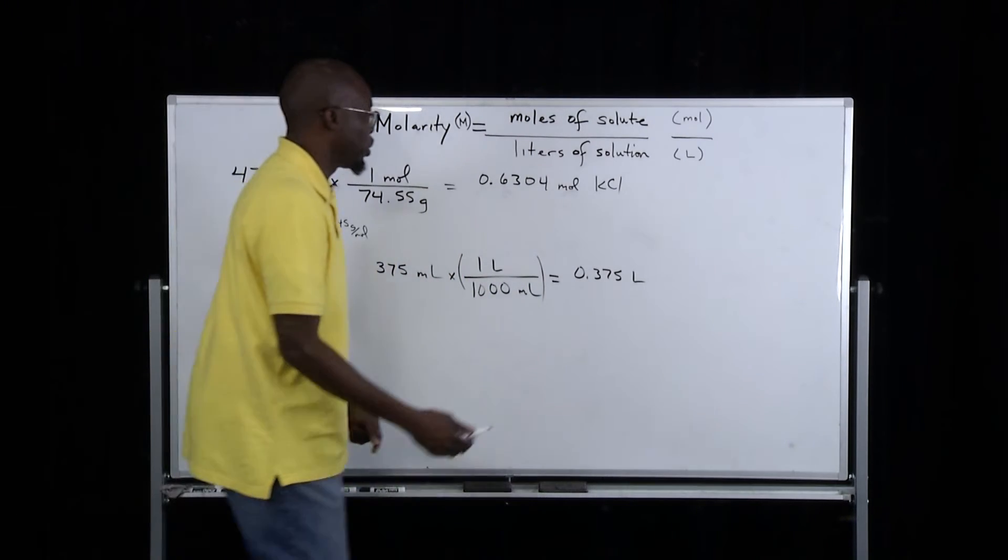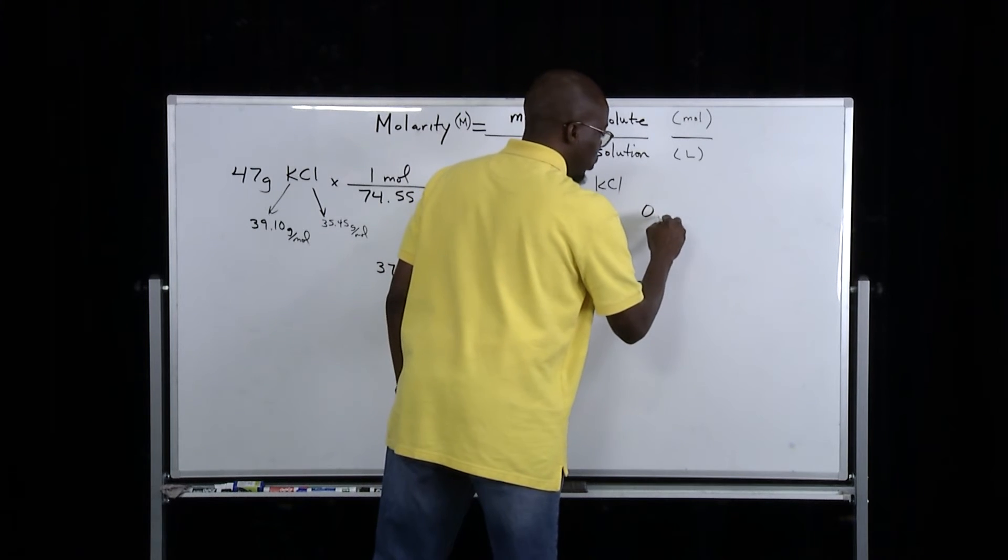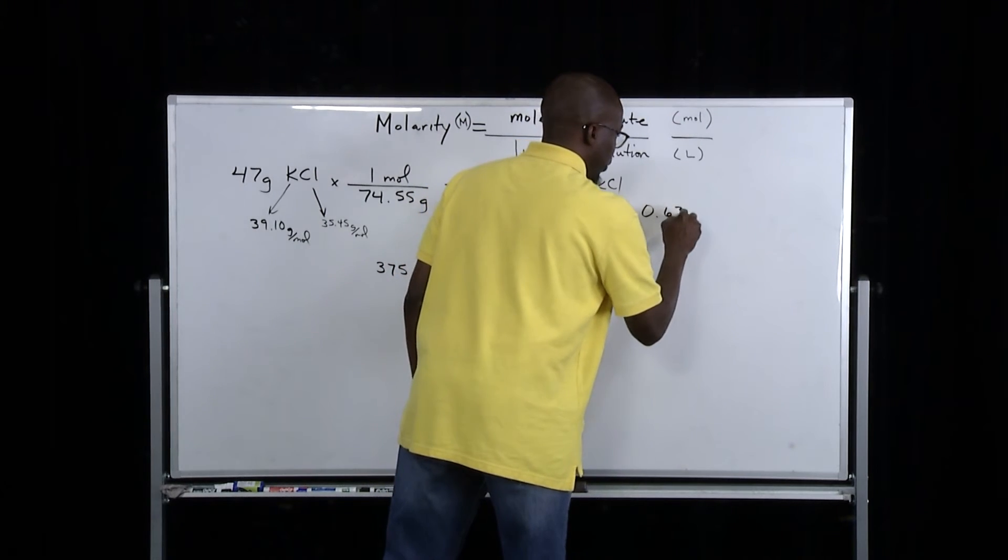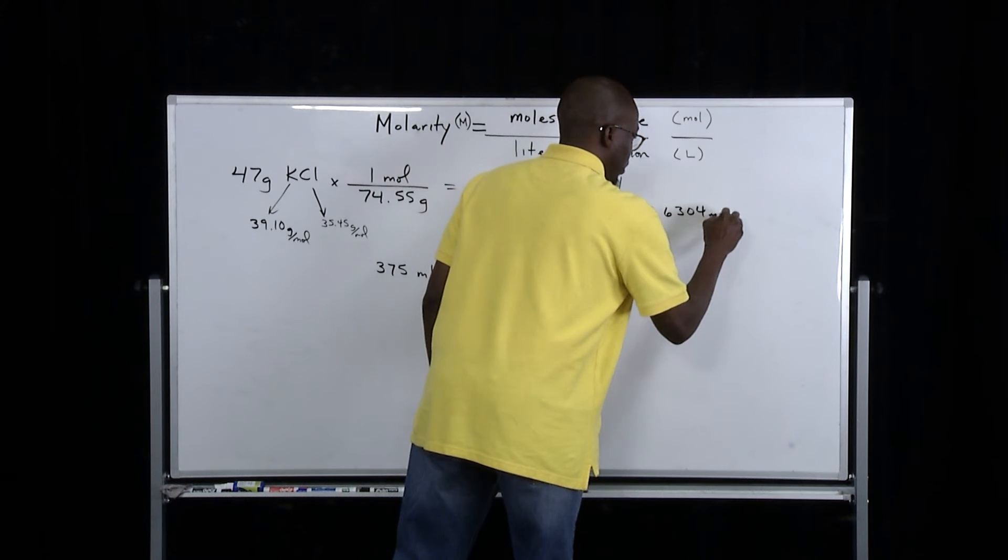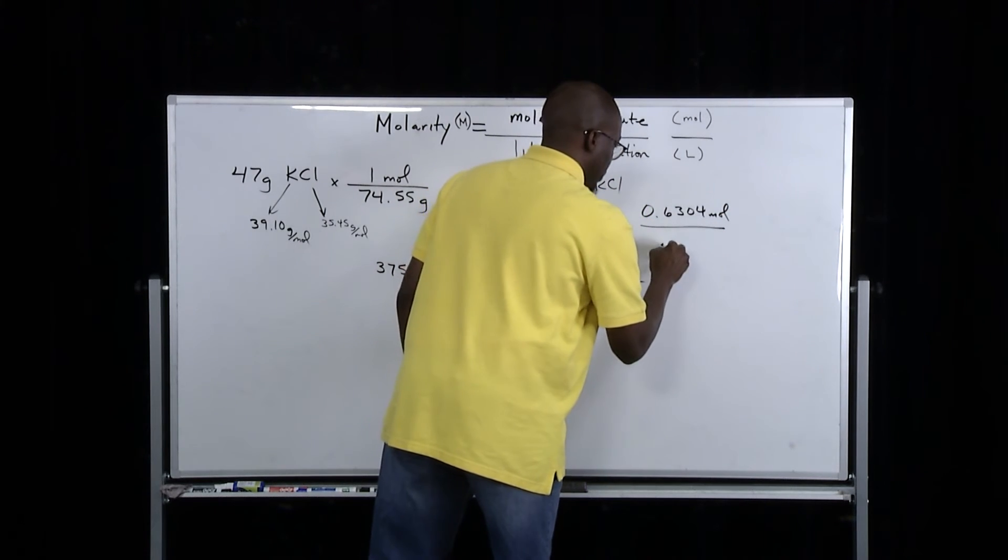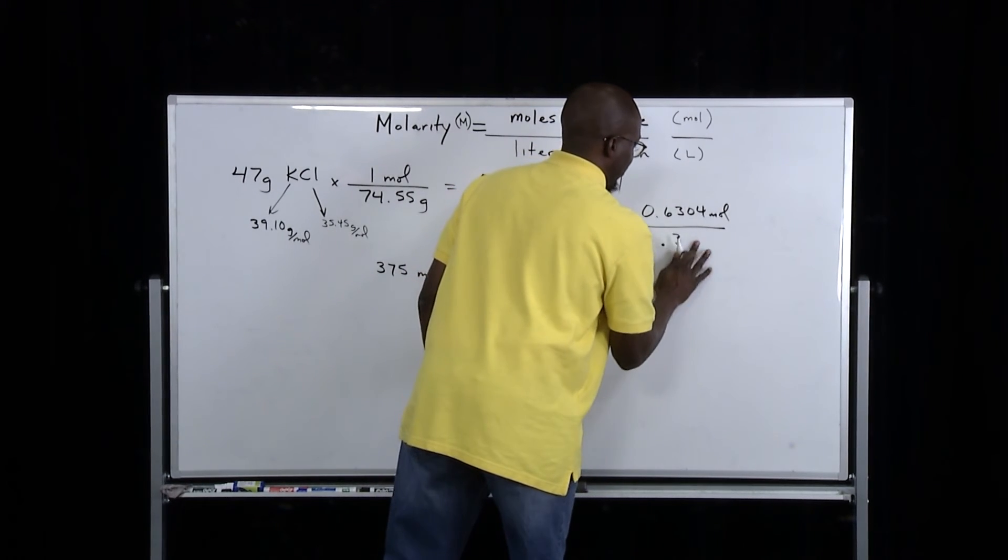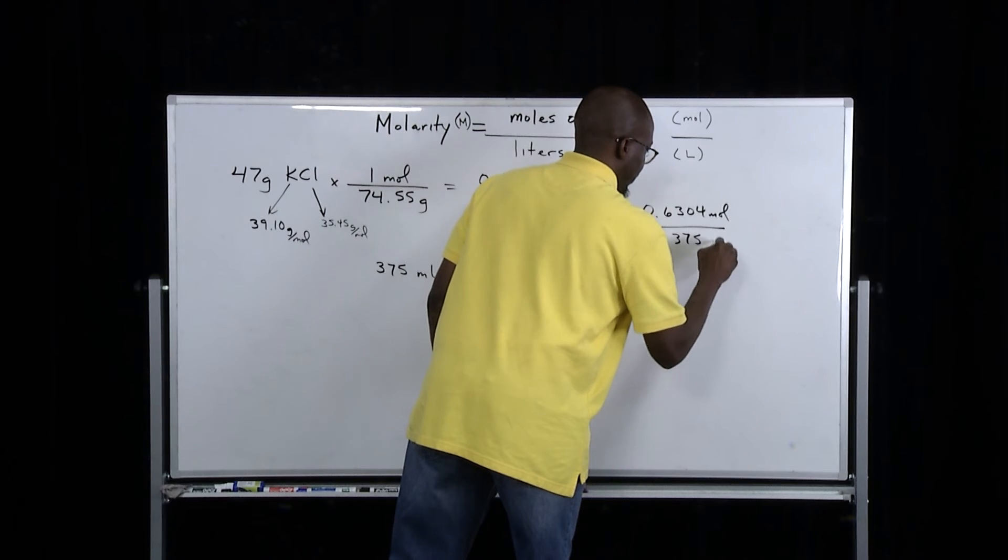In order to finish off this problem, you simply take the number of moles, which is 0.6304 moles, and divide it by 0.375 liters.